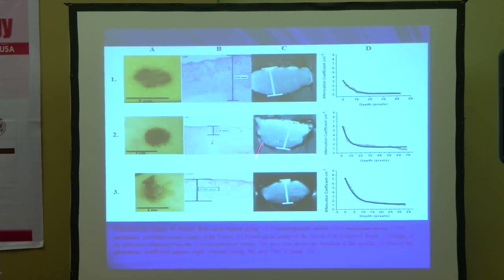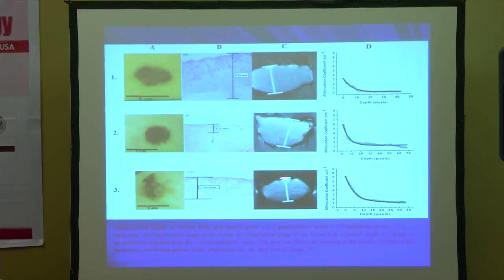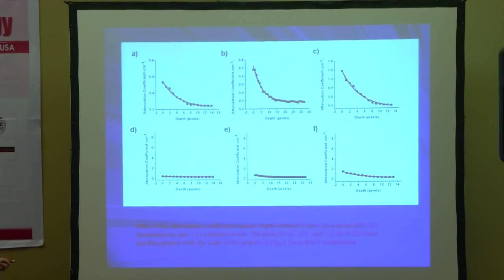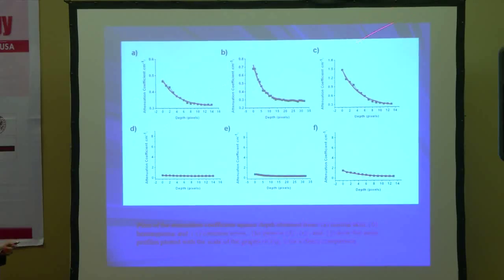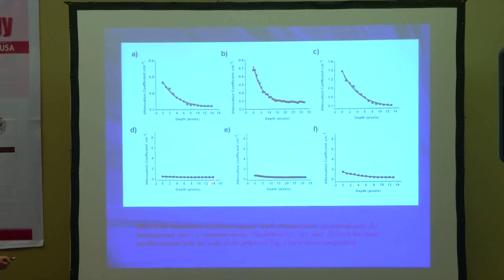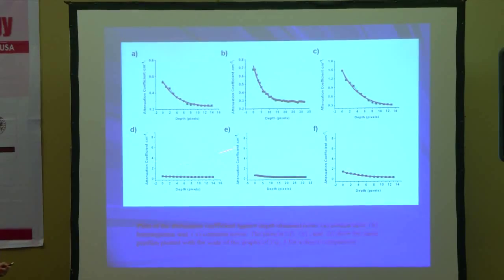With our method using the attenuation coefficient method, we show the 3D reconstruction. These are the controls: normal skin, the hemangioma, and the common nevus. You can see that they are quite different, and they have been arranged on the same scale as the previous one, with the maximum showing they are much lower than the pigmented skin conditions.